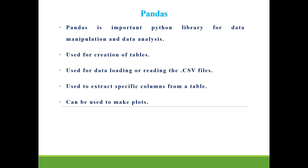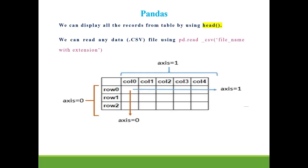Pandas library is also used to extract specific columns from a table. Once the data is loaded or the file is read with the help of the pandas library, we can extract any specific column of the table. We can also extract a set of rows using this pandas library. It is also used to make different types of plots. Pandas can also be used to display all records from the table using the head function. Here we can see an example — this is a table extracted using the pandas library from the .csv file, and we can extract information of all rows using this head function.